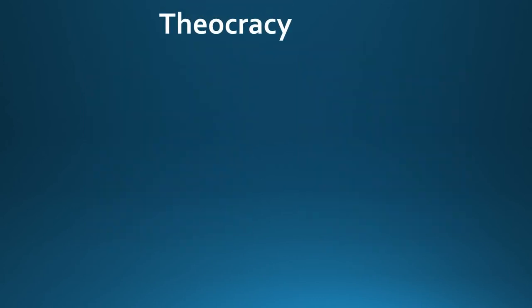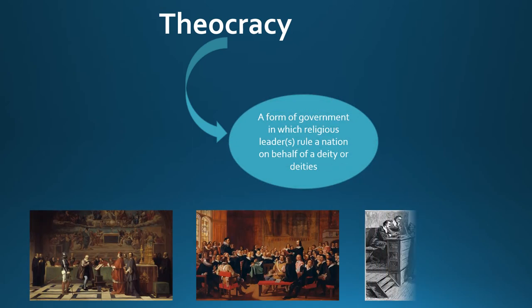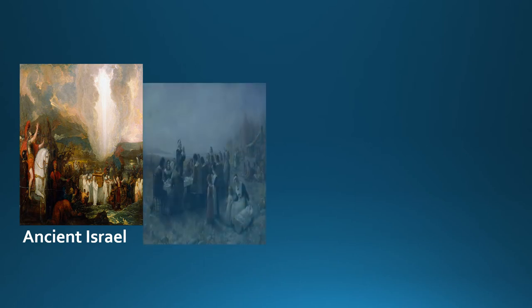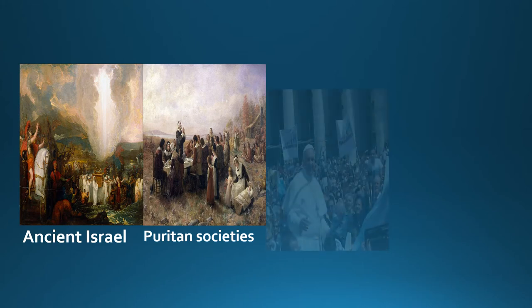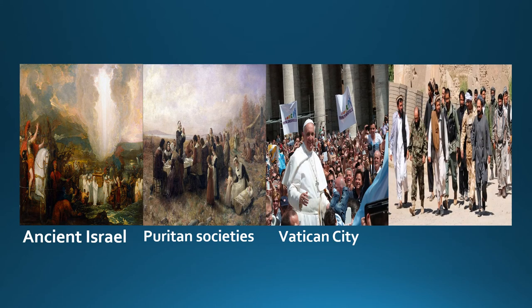A theocracy is a form of government in which a religious leader or religious leaders rule a nation on behalf of a deity or deities. Examples include ancient Israel under the rule of the biblical judges, Puritan societies in North America where only church members could participate in government and religious freedom was severely curtailed, Vatican City under the Pope, and the Taliban in Afghanistan, where many religious leaders hold powerful governmental positions and their interpretation of Islamic law is strictly enforced.